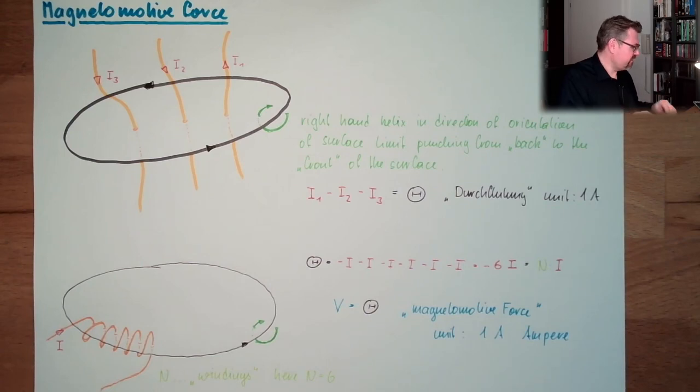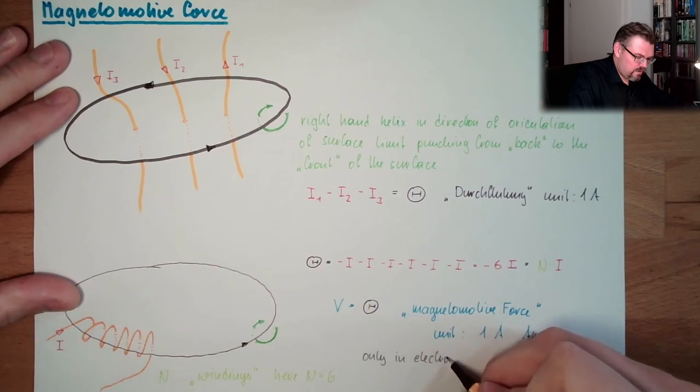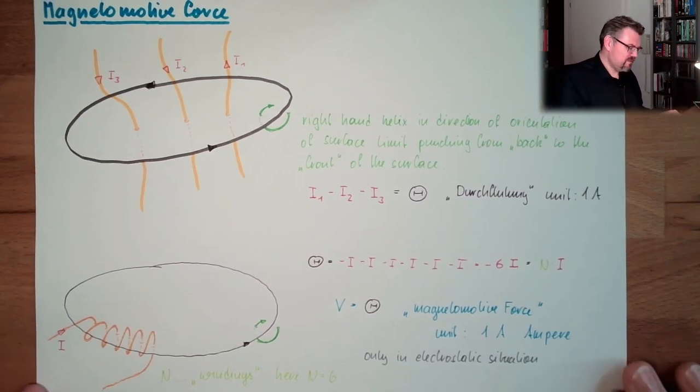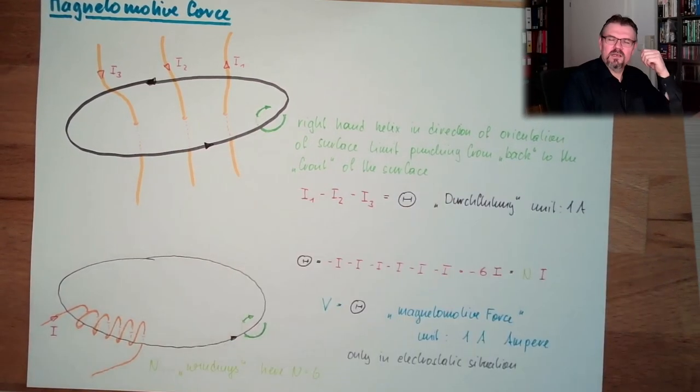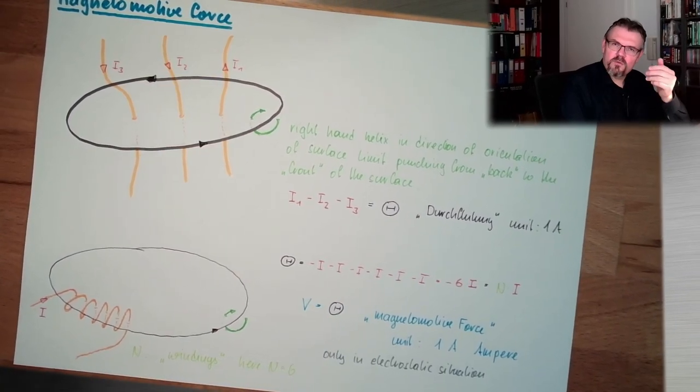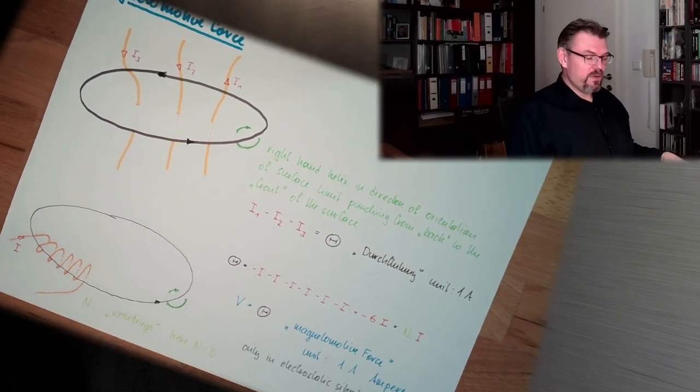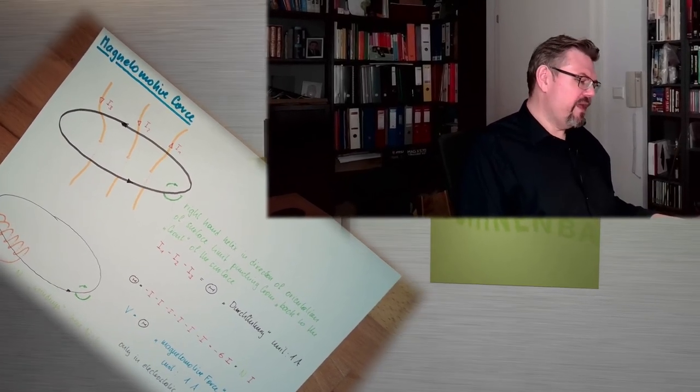But there's something missing. This is only exact in electrostatic, only in electrostatic situations. This means when there are no changing electric fields. This is actually the root of Ampere's Law, saying exactly this. And then comes Karl Maxwell's equations, and he extended this Ampere's Law to the Ampere-Maxwell's Law. Then we can also describe electrodynamic situations.